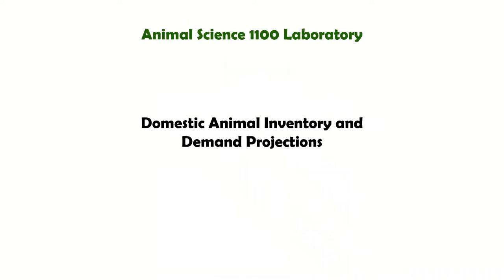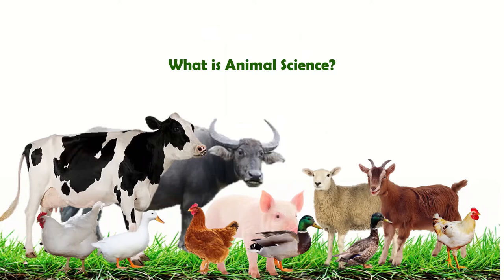Our module 1 is the Domestic Animal Inventory and Demand Projection. As an introduction, let us first define what is animal science. Animal science, also known as biosciences, is described as the study of the biology of animals that are under the control of humankind. It can also be described as the production and management of farm animals. Animal science is also concerned with the science and business of producing domestic livestock species, including but not limited to beef cattle, dairy cattle, buffalo production, horses, poultry, sheep, and swine production.